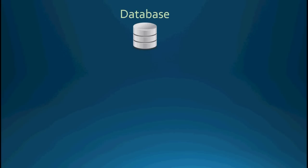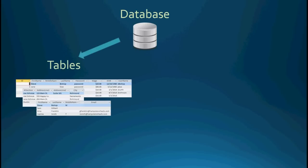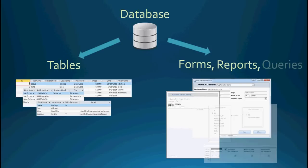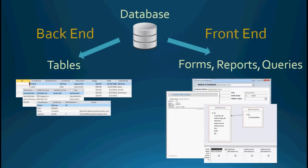It starts out with our current database file, which is just a single file. We're going to need to actually split our file up into two separate files. In one file, we're going to put all of our tables, which houses all of the data. Then in another file, we're going to put our forms, our reports, and our queries, as well as the VBA code that supports those things. These are called our back-end and front-end files.